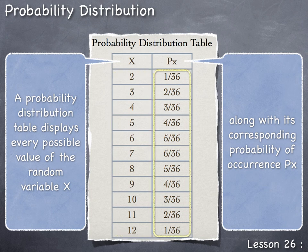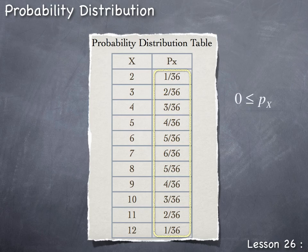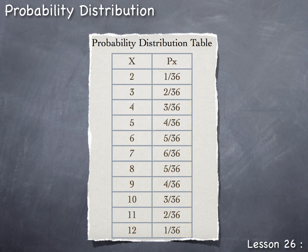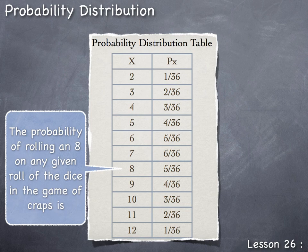Notice how each probability follows the given conditions: each individual probability is on the interval from 0 to 1, and summing all probabilities gives 1. Specifically, 1+2+3+4+5+6+5+4+3+2+1 = 36, divided by the common denominator of 36, equals 1 or 100%. This probability distribution table accounts for 100% of everything that can possibly happen when rolling dice in the game of craps. For example, the probability of rolling an 8 is 5 out of 36.